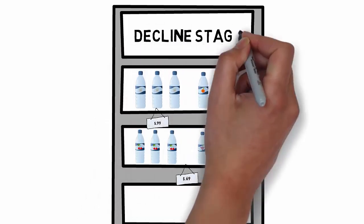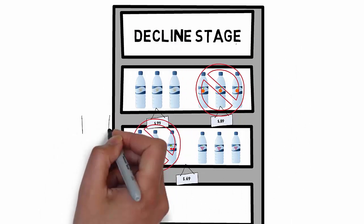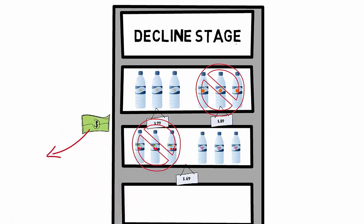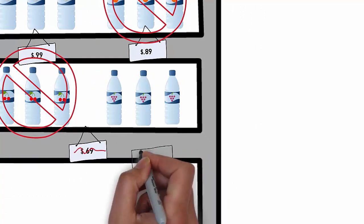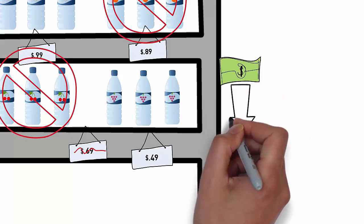In the decline stage of the product lifecycle, there would be fewer competitive products as many organizations choose to invest in other opportunities with a higher return on investment. Price cutting often becomes deeper, promotional budgets are limited, and ways to reduce product costs are examined.